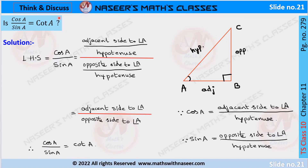Discuss, page number 279: is cos A by sine A equal to cot A? To prove this, let us consider a right angle triangle ABC which is right-angled at B.